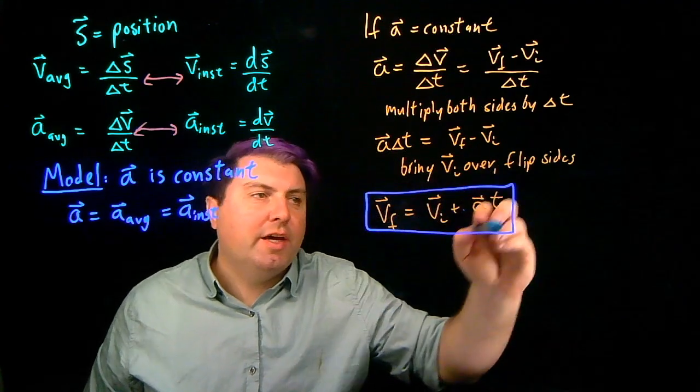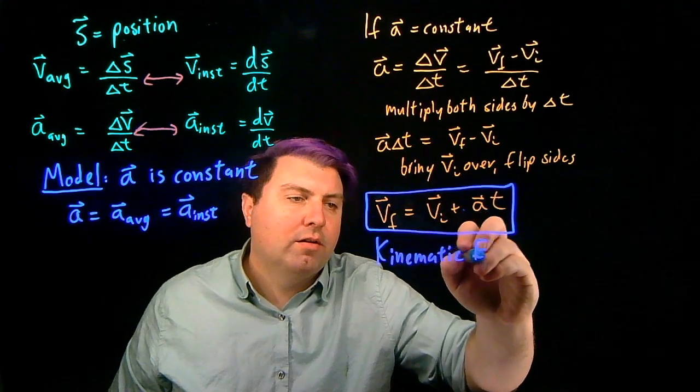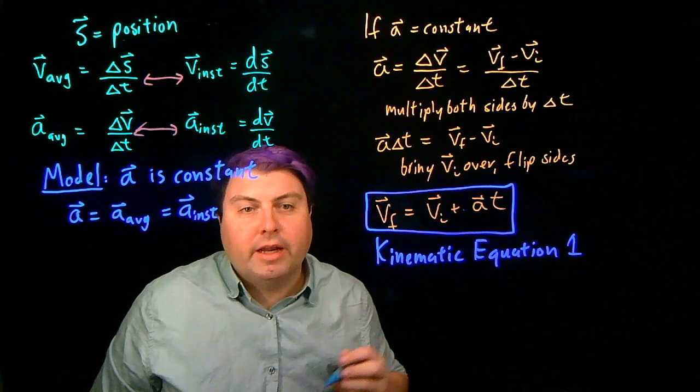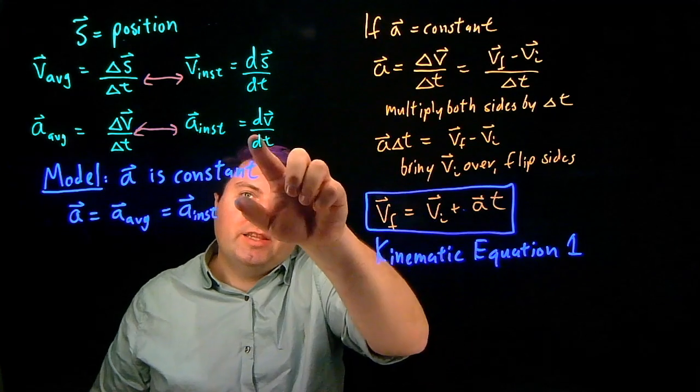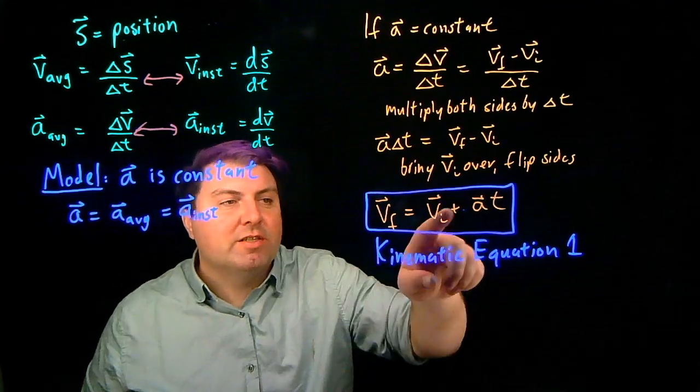So this is kinematic equation 1. And again, this is only in the case where acceleration is constant. If it's not, then I have to use this derivative form, and then we don't get this specific answer.